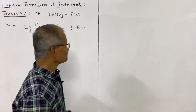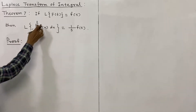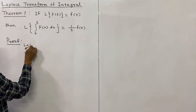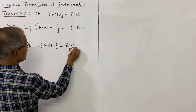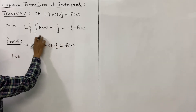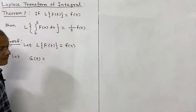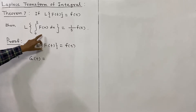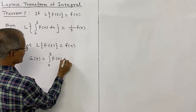The proof is easy. We shall write: let L{F(t)} = f(s), as given. We shall assume the function g(t) whose transform is to be obtained. We want to find the Laplace transform of the integral, and this integral we shall denote as a function of t. So g(t) = ∫₀ᵗ F(u) du. This is g(t).